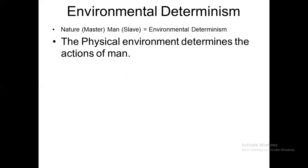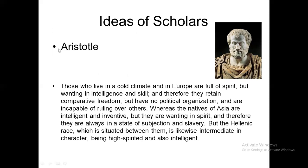Environmental Determinism holds that nature is master and mankind is slave — the physical environment determines the actions of man. The first scholar is Aristotle, who related climatic conditions to government and social organization. He argued that people in extremely cold climates are incapable of political organization and ruling others. The natives of Asia are intelligent and inventive but lacking in spirit, so they remain in subjection and slavery. Those in extremely hot areas are bond slaves.